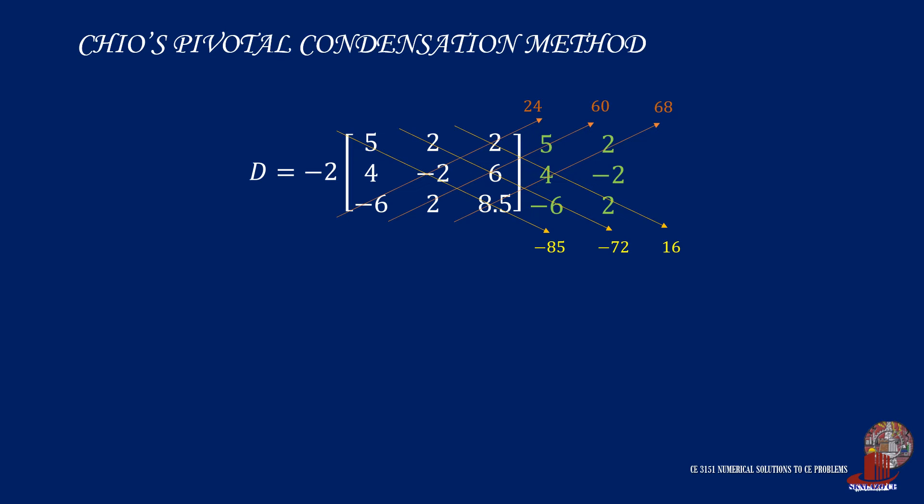Now, determinant D has negative 2 multiplied by the positives and the negatives, which are negative 85 minus 72 plus 16, minus the quantity of 24 plus 60 plus 68, and this gives 586 just the same.